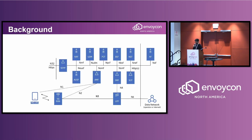Starting with some background on why we launched into this whole endeavor: this is roughly how the 5G core network looks. It is basically a service mesh where all interfaces are connected via HTTP2. The network functions that me and my colleagues work on are the ones marked in green — called a service communication proxy and a security and edge protection proxy. Both of them use Envoy for specific routing, observability, or other traffic requirements within a 5G core network.